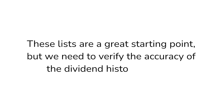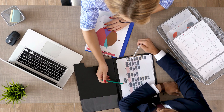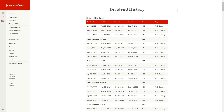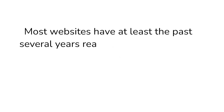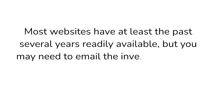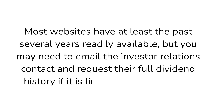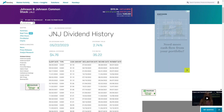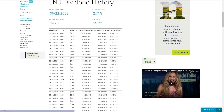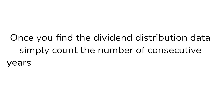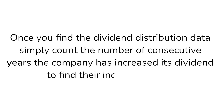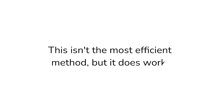These lists are a great starting point, but we need to verify the accuracy of the dividend history as well. To view the dividend history of a stock, the first option is to go straight to the company's investor relations page and pull up their dividend history. Most websites have at least the past several years readily available. Another option is to visit Nasdaq.com, Seeking Alpha, or MarketWatch and look up the symbol. Once you find the dividend distribution data, simply count the number of consecutive years the company has increased its dividend to find their increase streak.